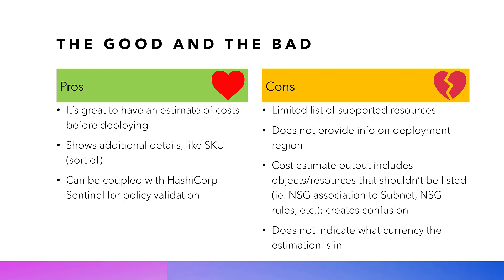What I didn't like was the currently limited support for resources. As noted, there are only 13 resources supported for AWS and Azure and three for GCP, so it doesn't cover the large spectrum of resources out there. That said, it's a new feature from HashiCorp, and as with anything new, things are iterated on, improved, and refined — so I expect that list to be expanded in the future.